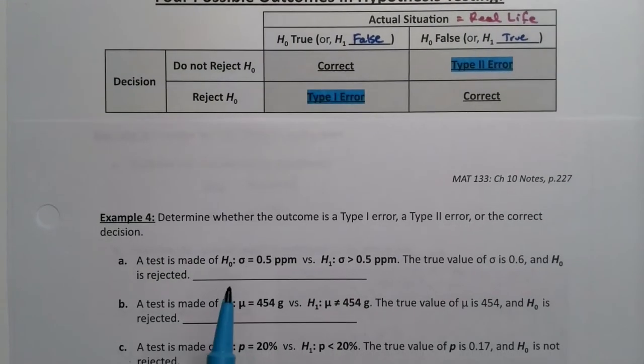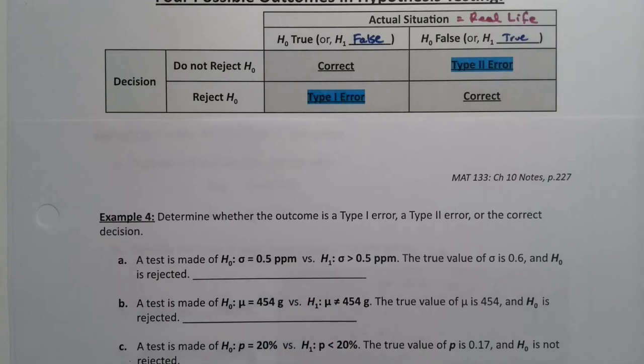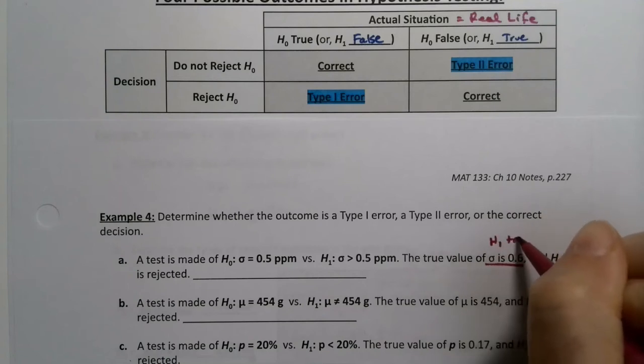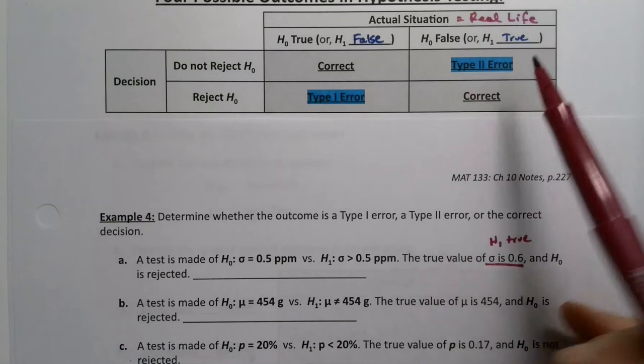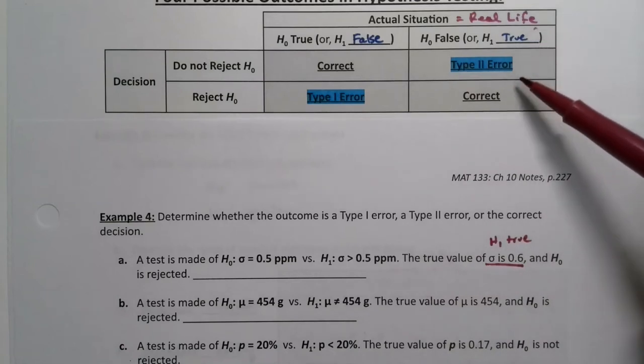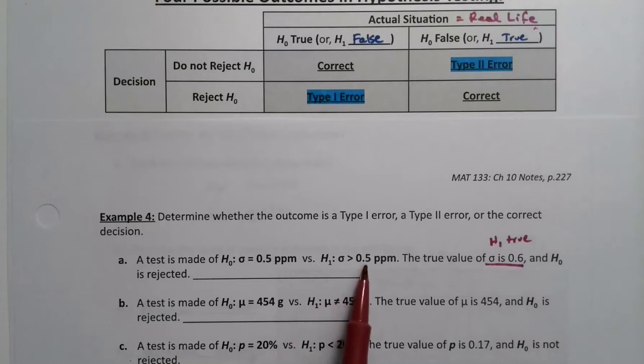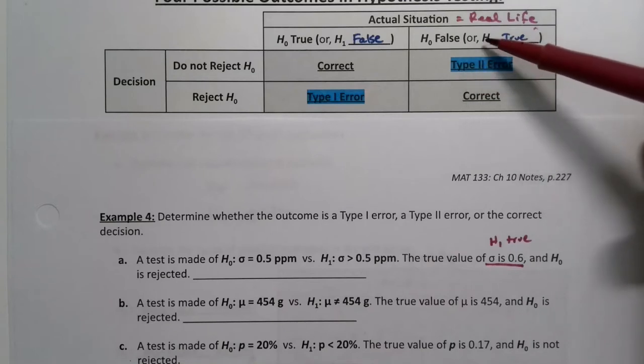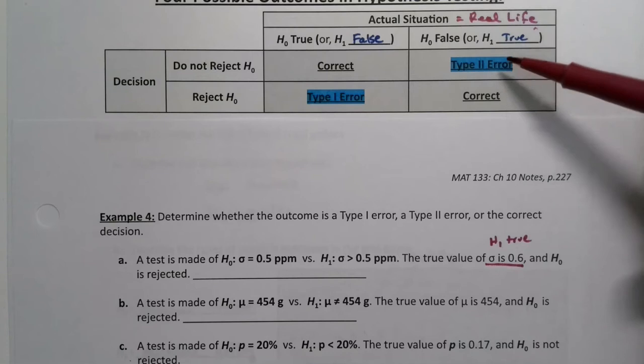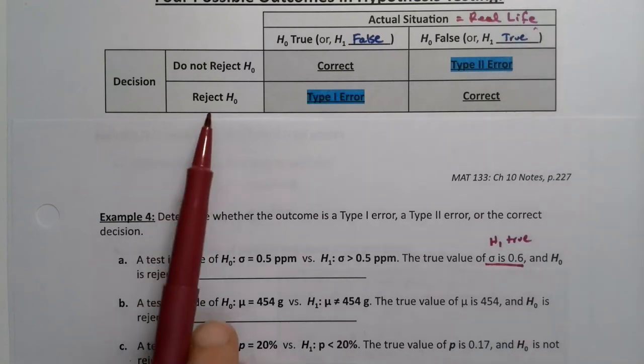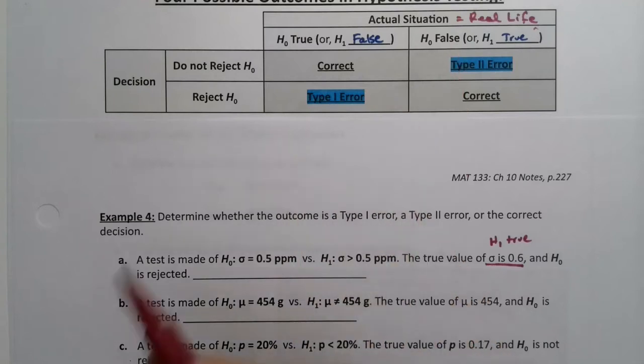So a test is made of H₀: σ = 0.5 versus H₁: σ > 0.5. The true value of σ is 0.6. So there's a key - the true value, that's reality. Reality is that σ is 0.6. Well 0.6 is greater than 0.5, so reality is that H₁ is true, which means I'm over on this side of the house, looking at this column because in reality H₁ the alternative is true. But if H₀ was rejected, I'm sitting here - I either make a Type 2 error or a correct decision. So H₁ was true and I decided to reject H₀, then I made a correct decision.